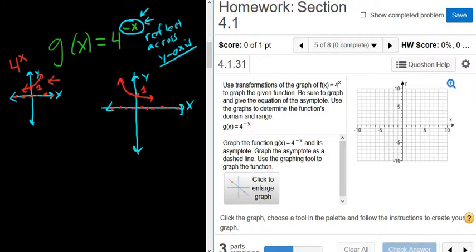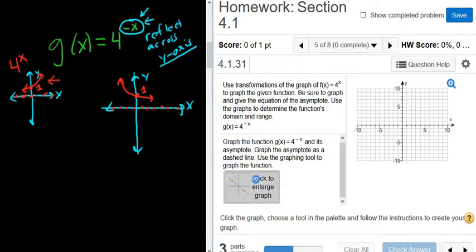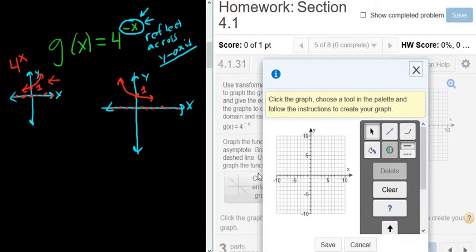Now we just have to type all that into Math Lab. So I'm going to come over here and click where it says Click to Enlarge Graph. So I'll left click. And I'll go ahead and do the line first. So for the horizontal asymptote, you have to click a dotted line. And then we have to click the line tool.